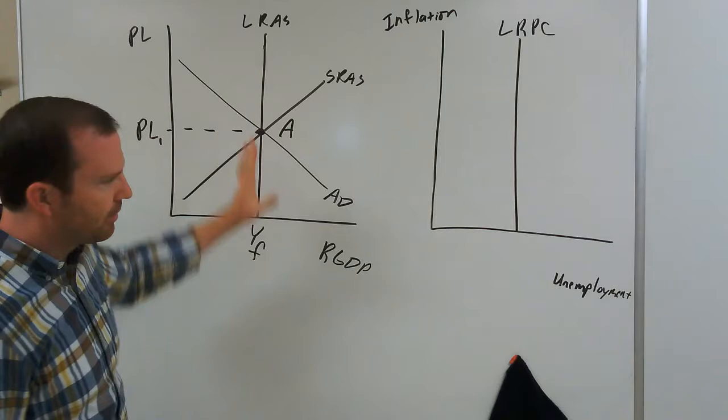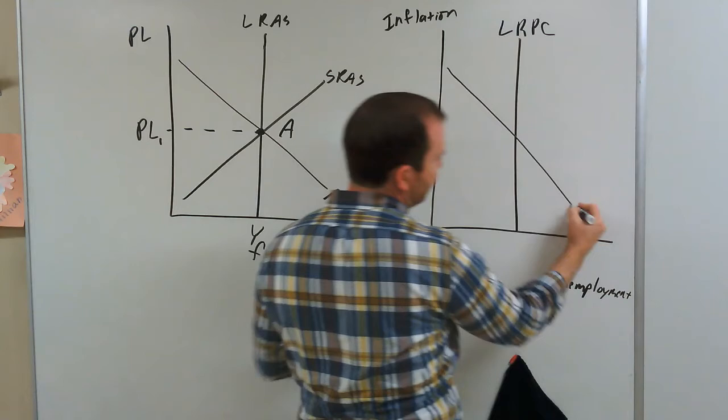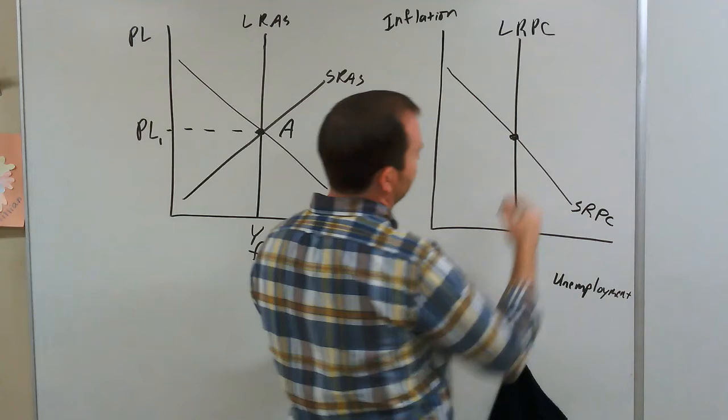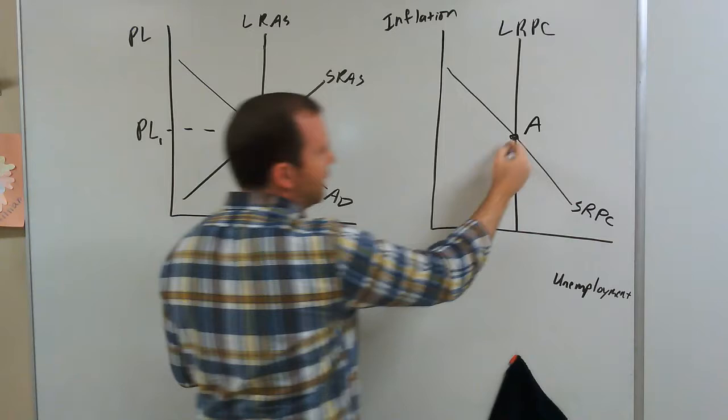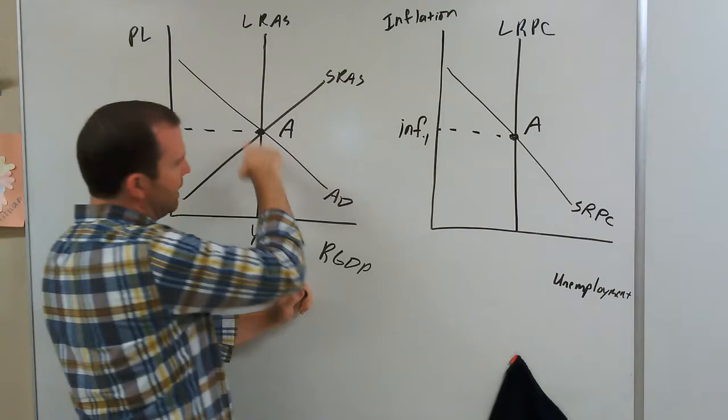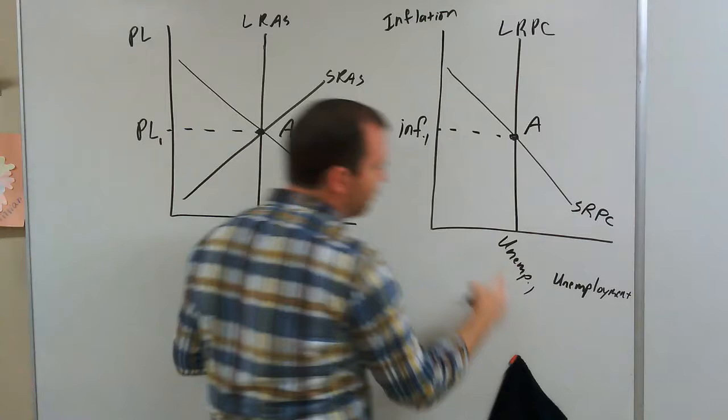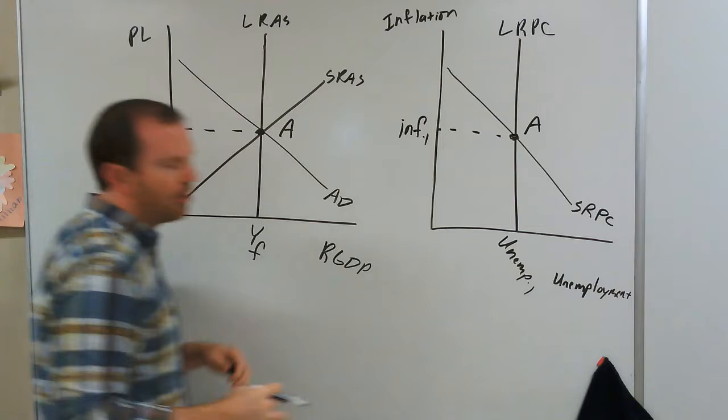Where the two curves intersect, that's our long-run equilibrium — point A on both graphs correlate to the same situation. This would be our inflation rate at this equilibrium, and this is our unemployment rate at this equilibrium. So we have both graphs showing the same situation, just with different variables.